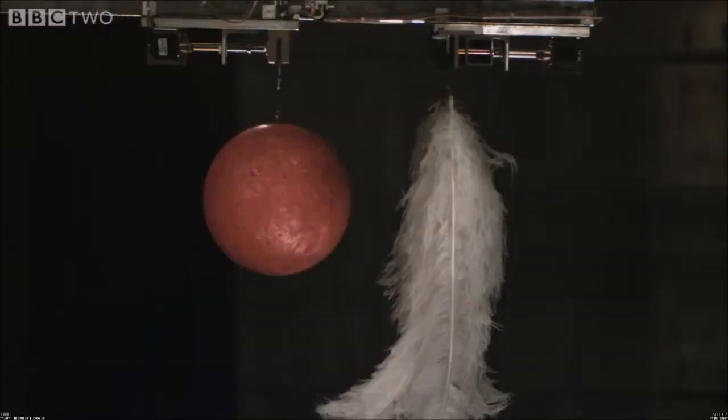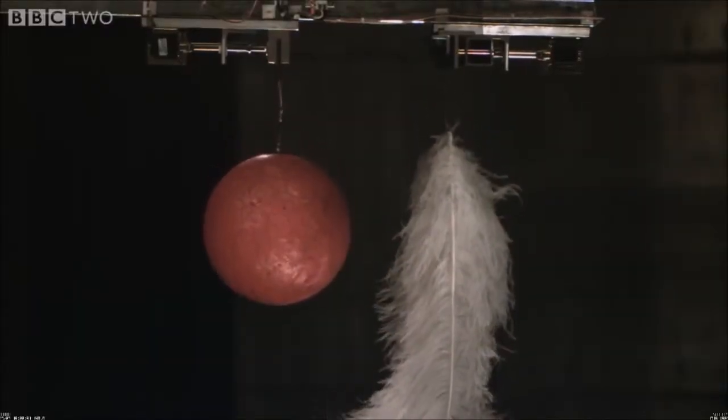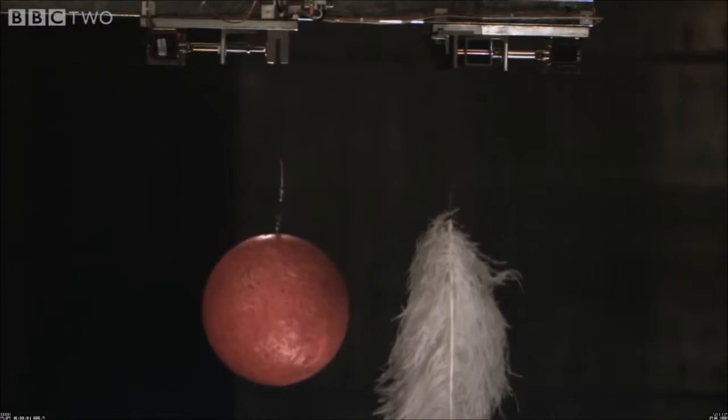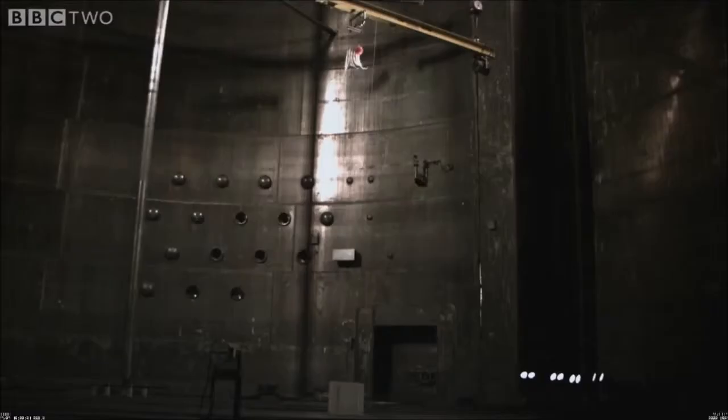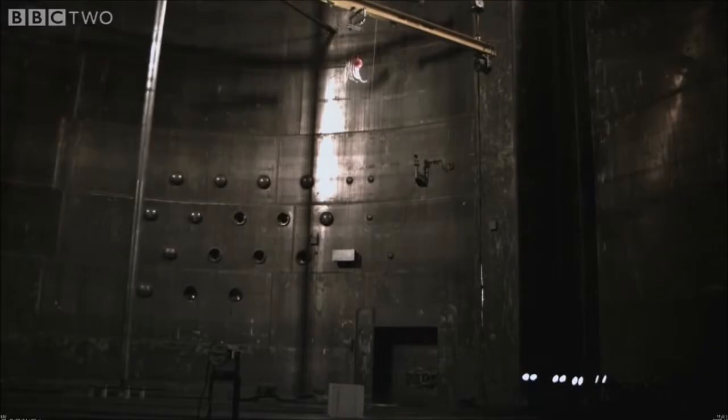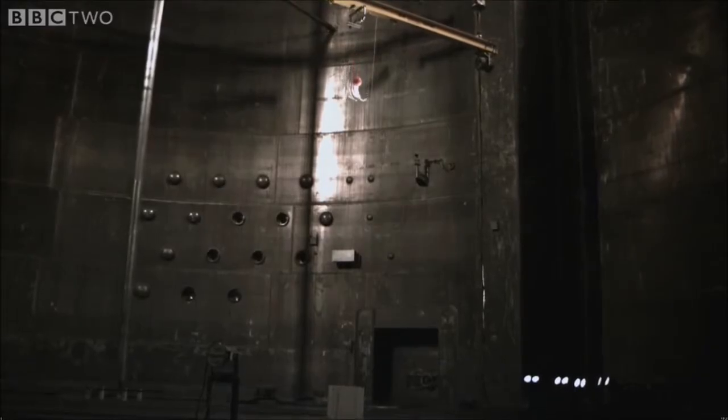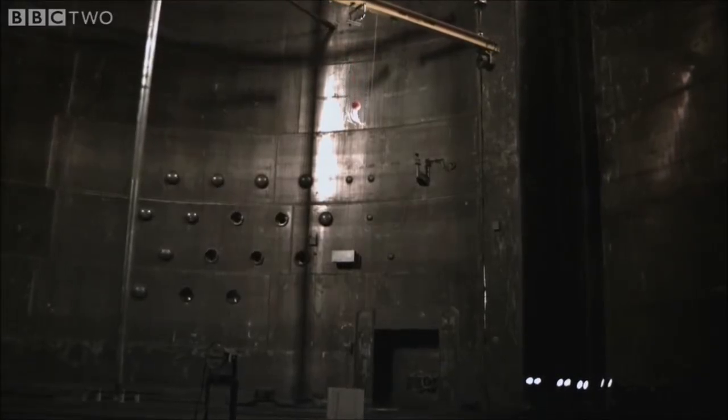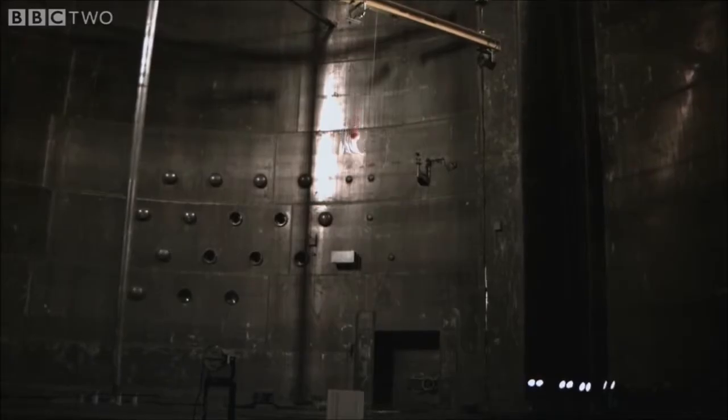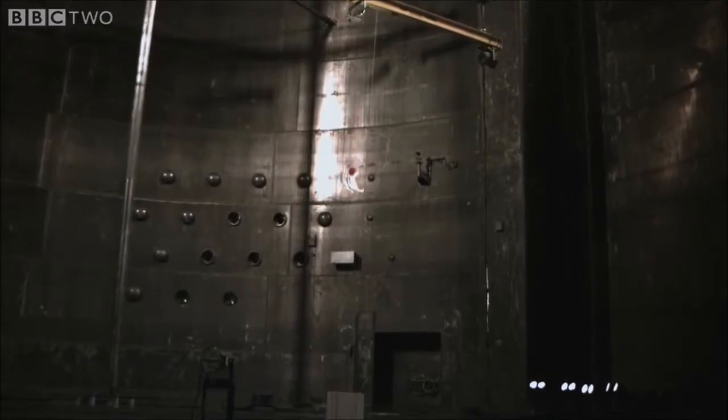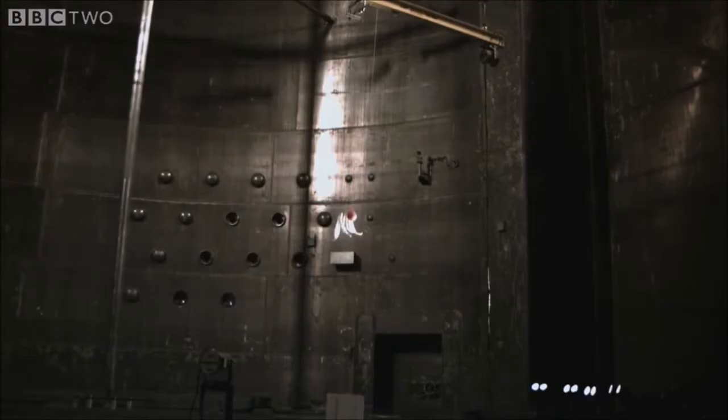This absence of gases in a vacuum can be seen by dropping a bowling ball and a feather at the same time. Normally, gases in the atmosphere cause drag on objects, especially on a feather, which impedes the rate at which it falls. When gas molecules are removed, there is nothing to cause drag on the feather, and so it falls at the same speed as the bowling ball.